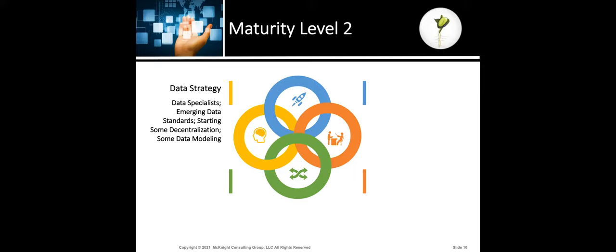Now I'm starting to break out the factors of the data organization into four components: Strategy, Architecture, Technology, and Organization. Let's start with Strategy. In level two organizations, you have data specialists — it's not just a side skill. You have emerging data standards — the word is 'emerging' — they're not comprehensive but there are some, with some enforcement. You're starting some decentralization: it's not all about central IT anymore. There's some technology specialists getting closer to the business areas, as long as there's a thread connecting everybody.